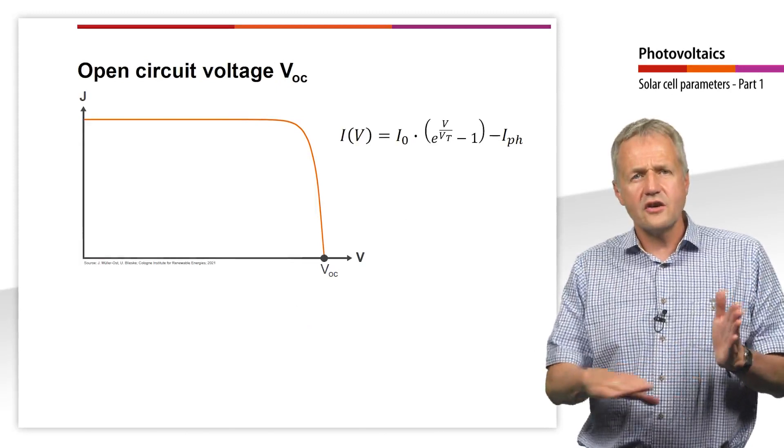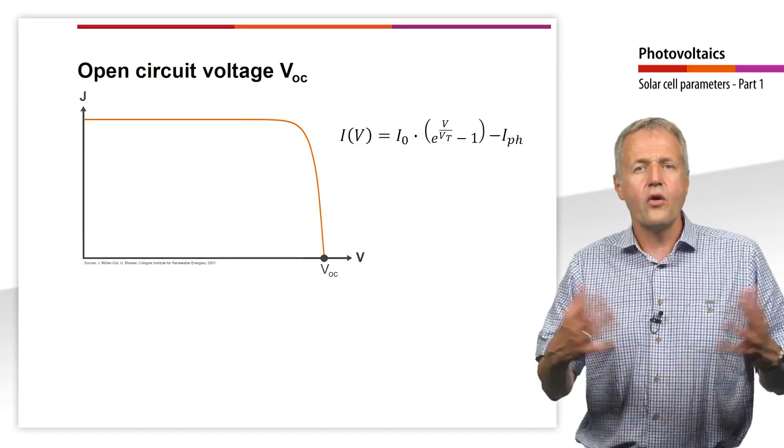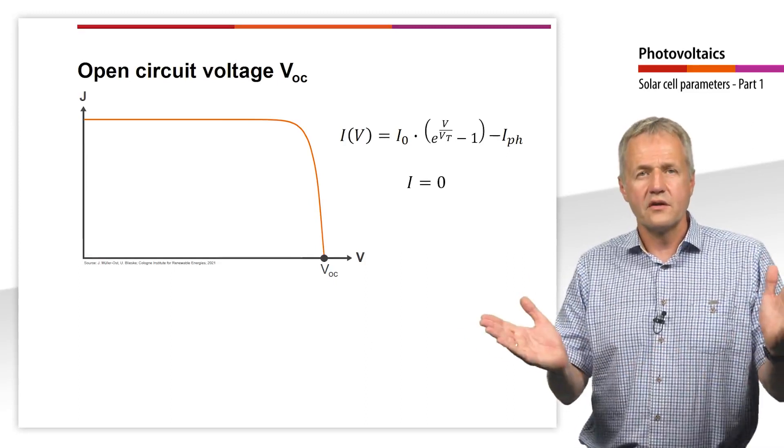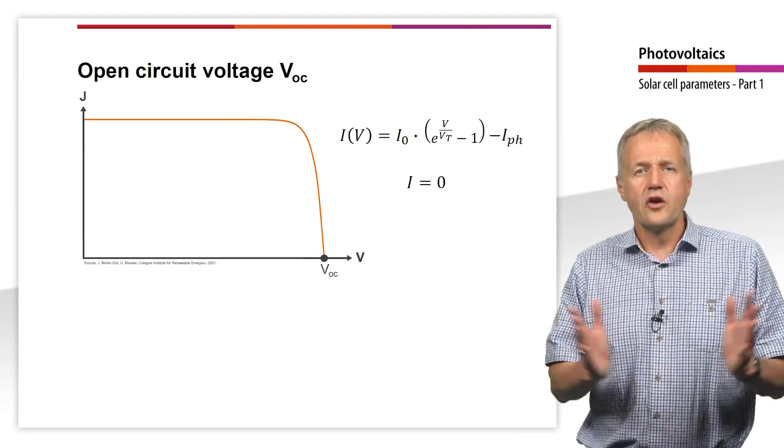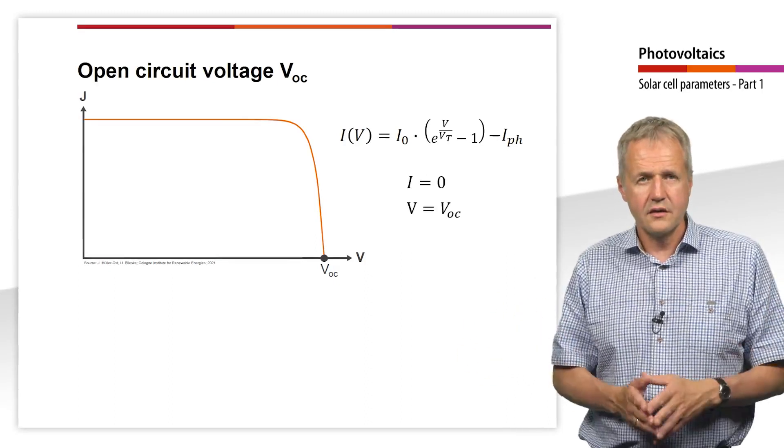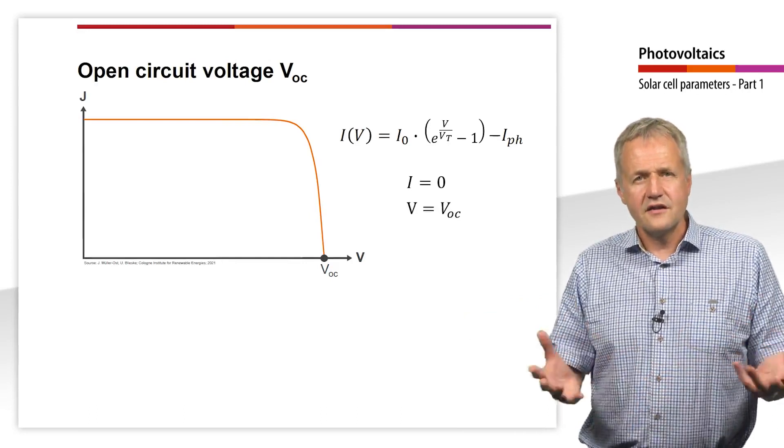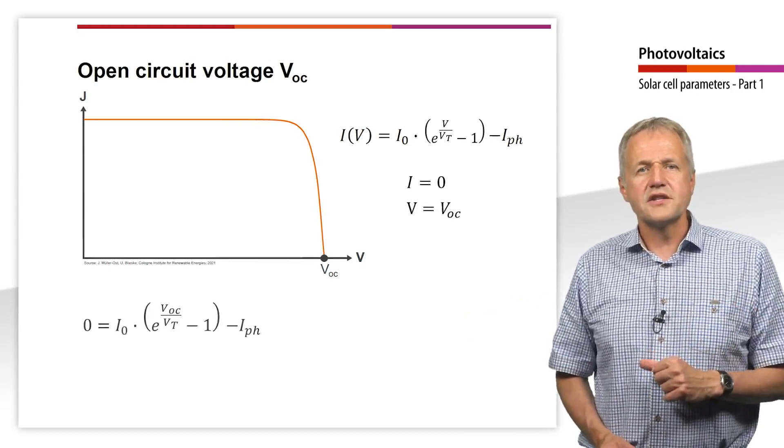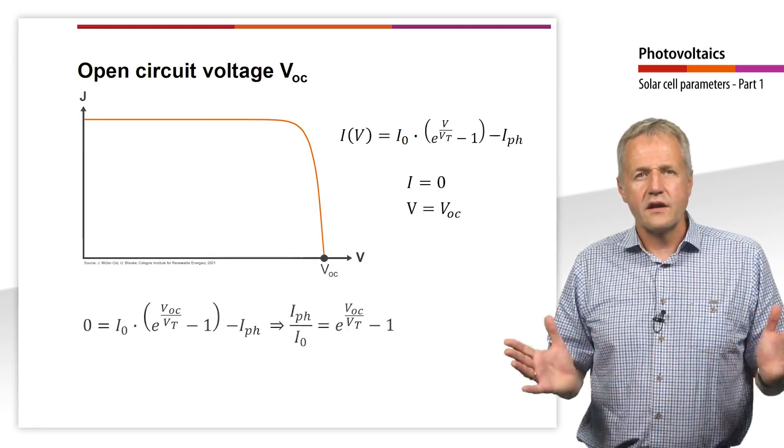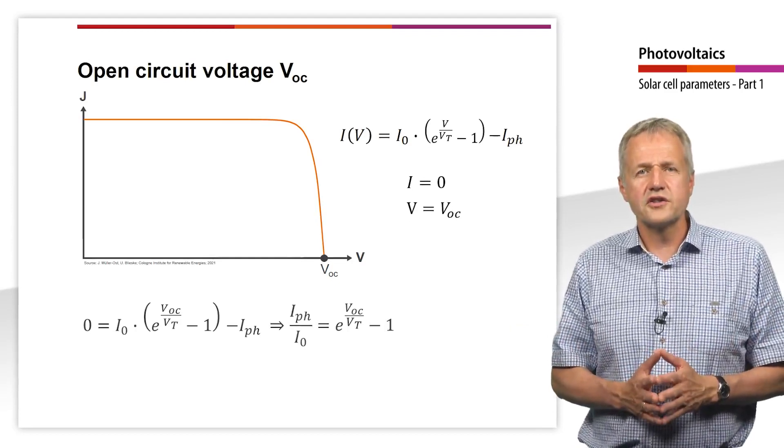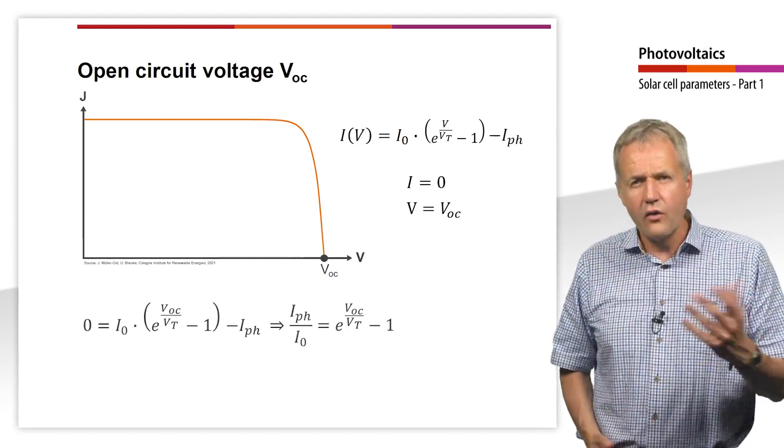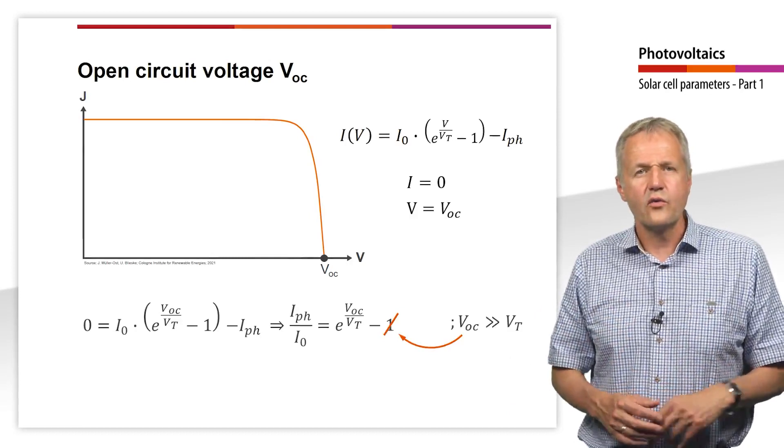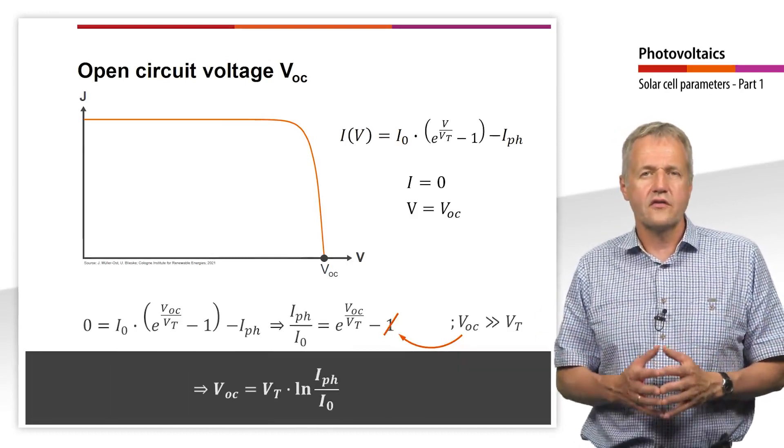Next, we consider the intersection of the JV curve with the x-axis. At this point, the current is zero. That is the case when the circuit is open. The voltage that builds up at the open terminals is called open circuit voltage, VOC. Let's insert for the current in the equation zero. We can rearrange this equation. Since we can assume the open circuit voltage is significantly higher than the thermal voltage with only 25.9 mV at room temperature, we can neglect the minus one. Rearranging the equation provides the open circuit voltage.